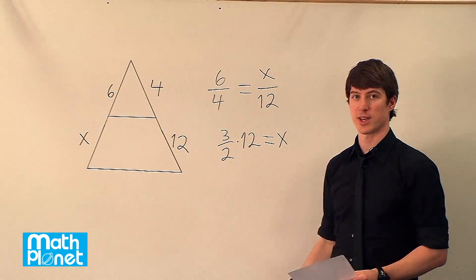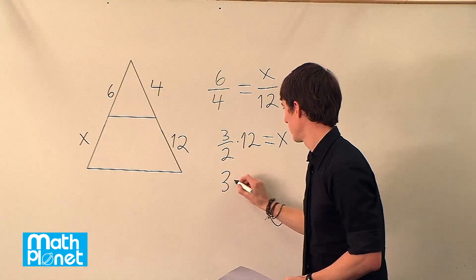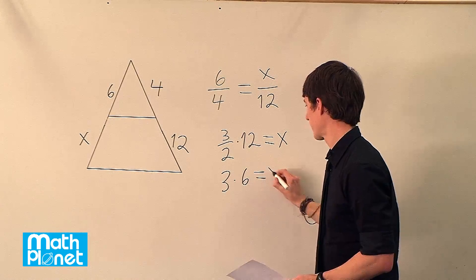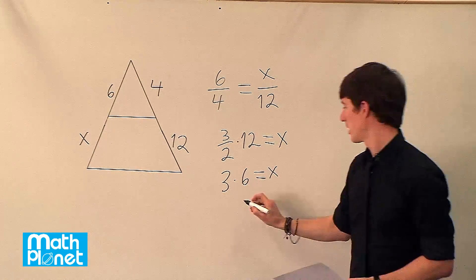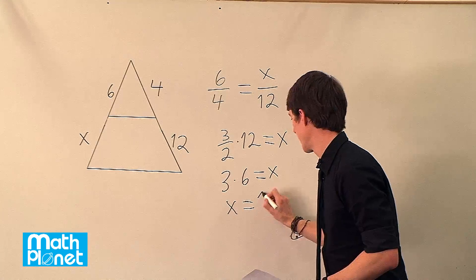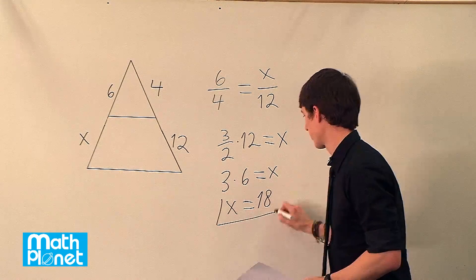So 12 divided by 2 is 6, so I have 3 times 6 equals x. And finally x equals 6 times 3, so x equals 18. And that's our final answer.